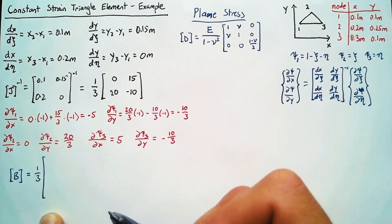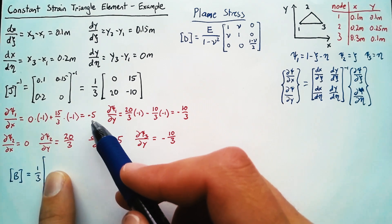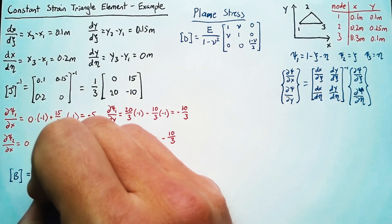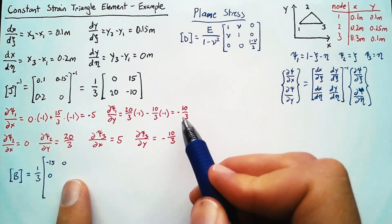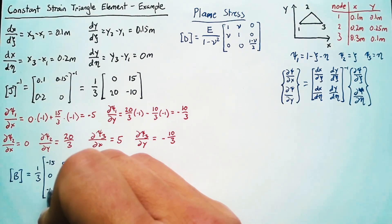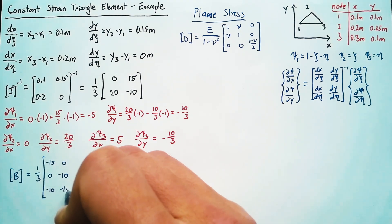And so for our first piece here, we're going to end up with negative 15, 0, 0, then negative 10, and then in this spot we get another negative 10, and then a negative 15.